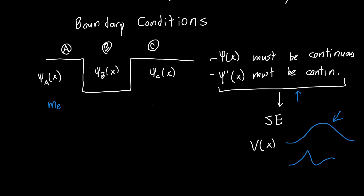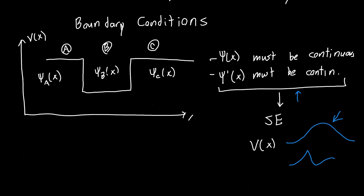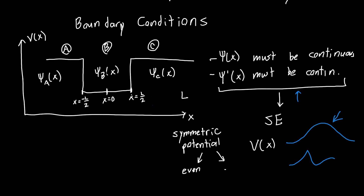Let's set up a coordinate system. The potential is on the y-axis and x is on the x-axis. I'll define the center of the well to be x = 0, so the well goes from x = −L/2 to x = +L/2, giving a total length L. The reason for this choice is that it gives us a symmetric potential, which makes Schrödinger's equation much easier to solve — our solutions throughout all of x have to be either even or odd, meaning they look like a cosine or a sine, but not a superposition of both.